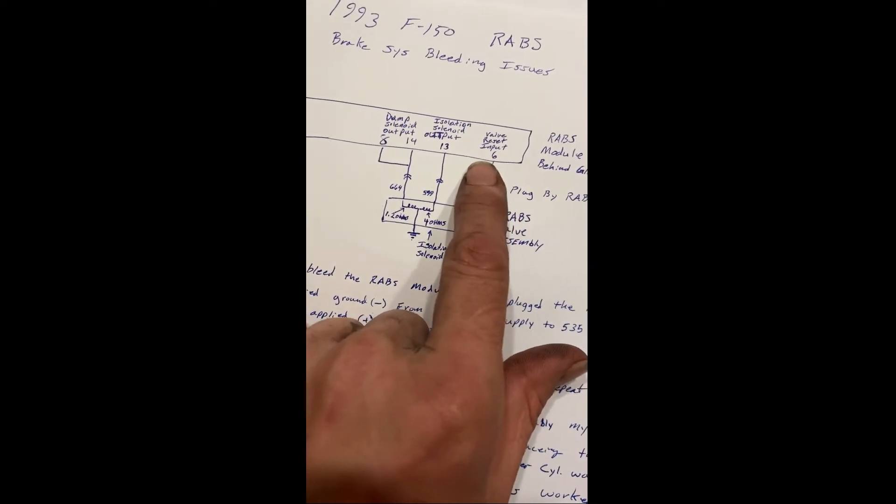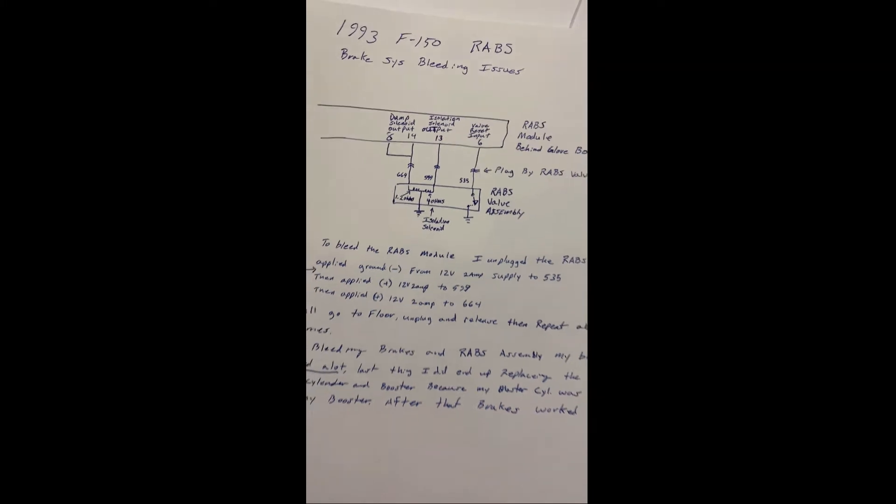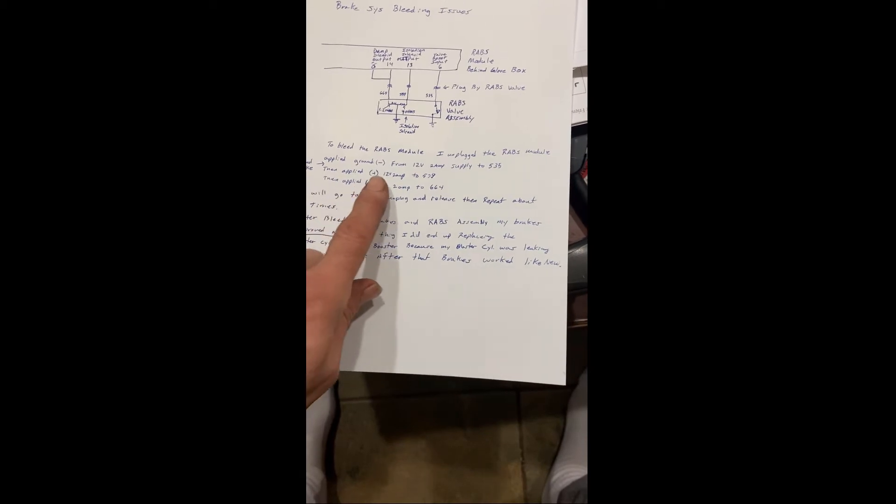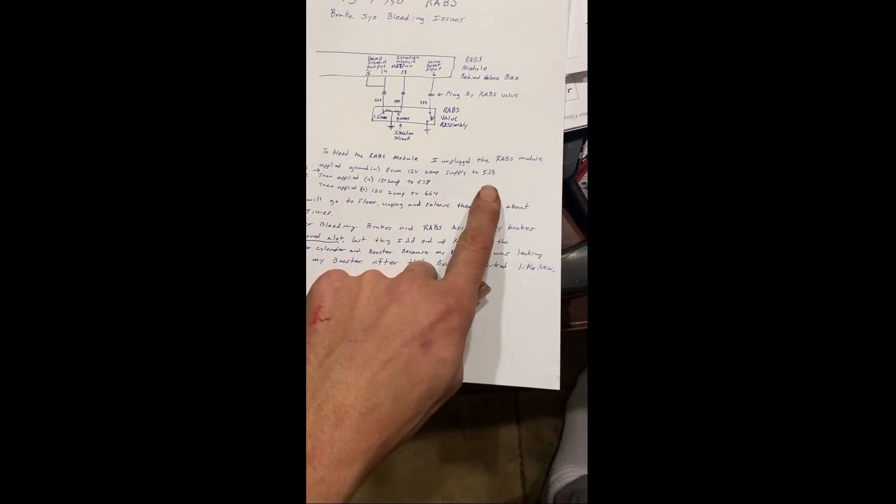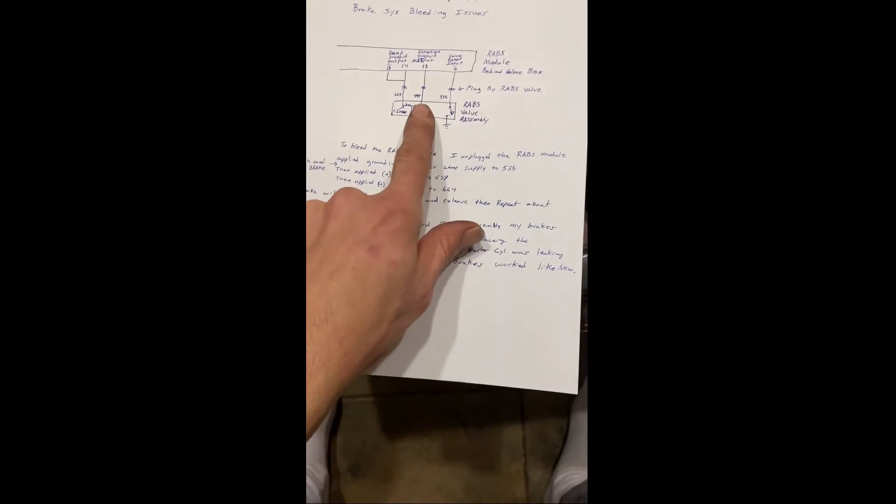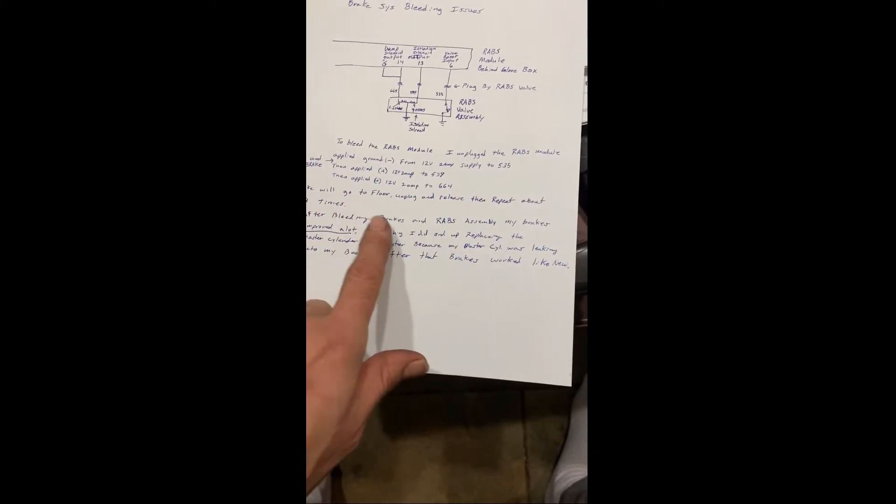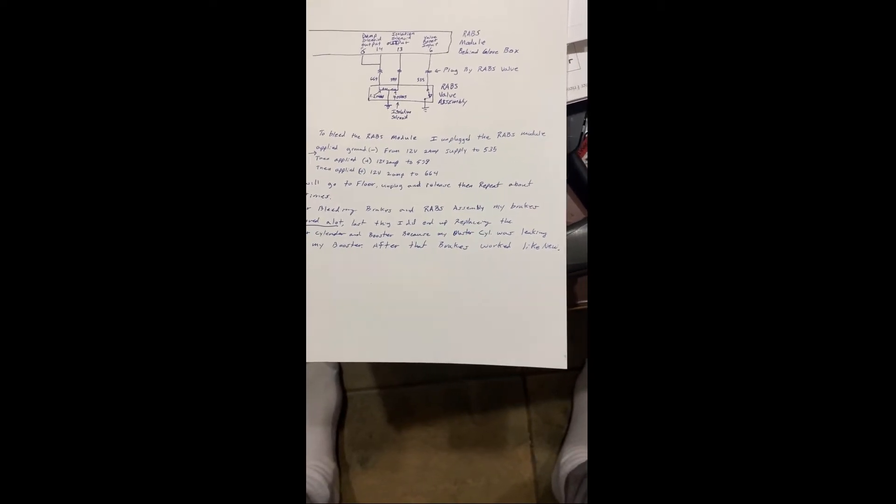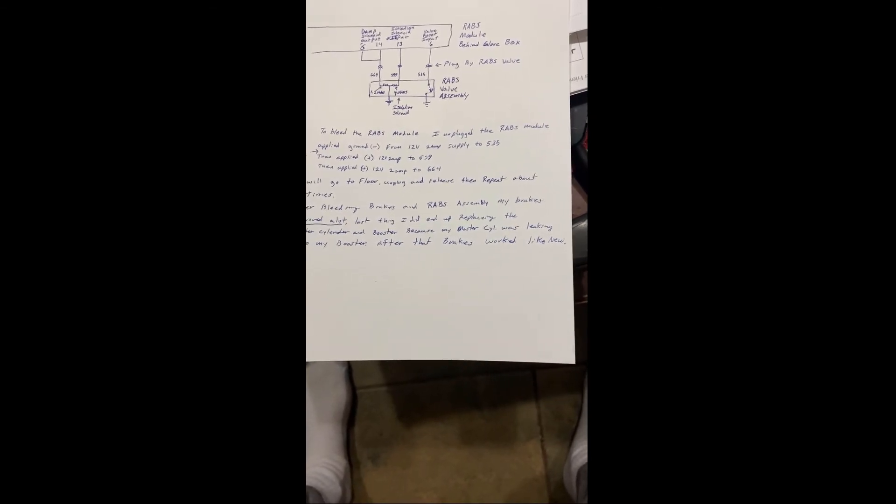So to bleed the RABS module, I unplugged the RABS module, applied ground negative from twelve volt two amps to circuit 535, that's a wire right there. I push and hold the brake, then I applied twelve volt two amps to wire number 599 isolation valve, then applied twelve volts to 664. Brake will go to the floor. Unplug and release the brake slowly and then repeat. Do that about three times after bleeding brakes and the RABS assembly. My brakes improved a lot. Last thing I did end up replacing the master cylinder and booster because my master cylinder was leaking into my booster. After that the brakes worked like new.